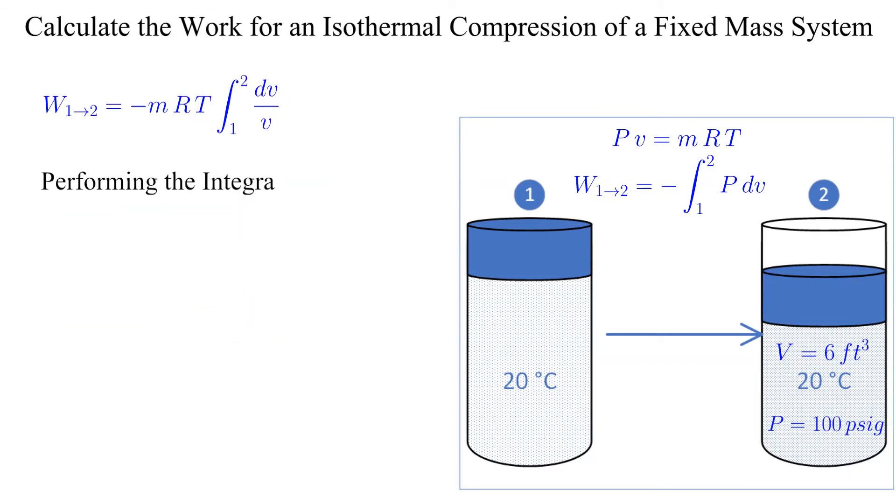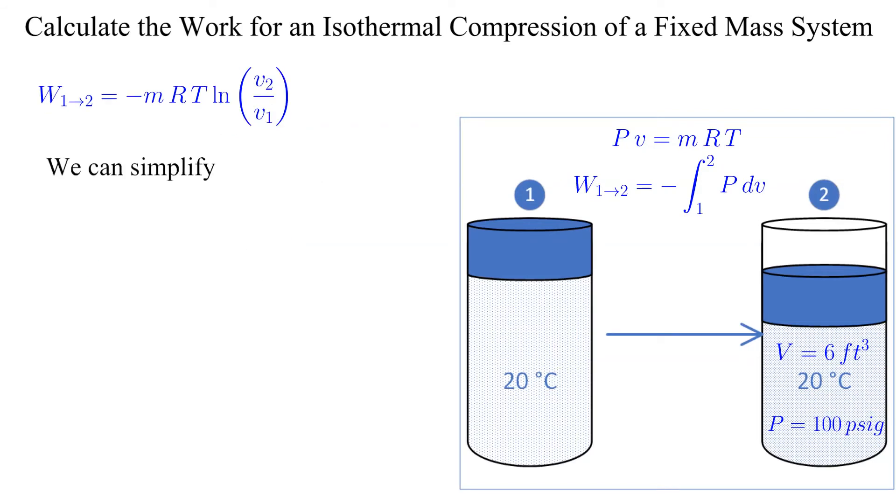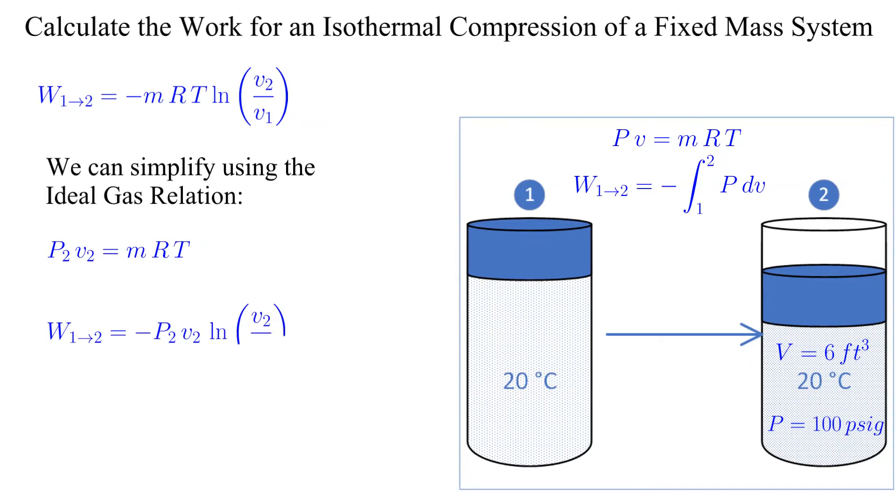Now we perform the integration. The product of mass times the gas constant times the temperature is a bit troublesome and could require some additional work. Luckily, that product is a constant and equals the product of the pressure and volume at state 2, which is known.